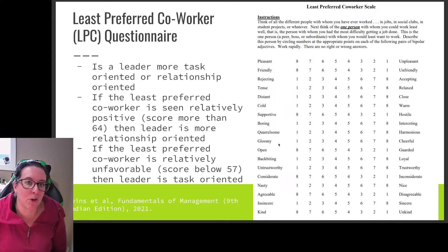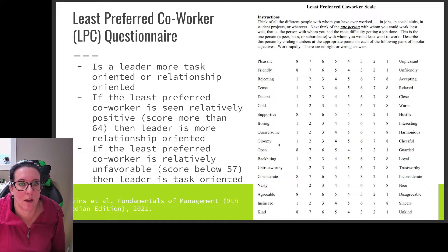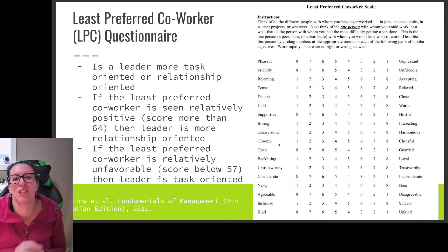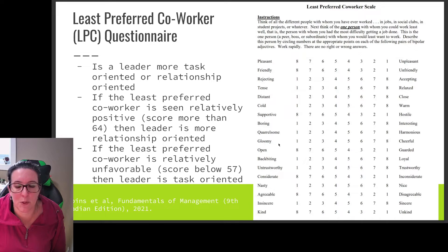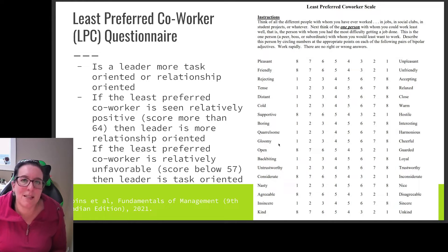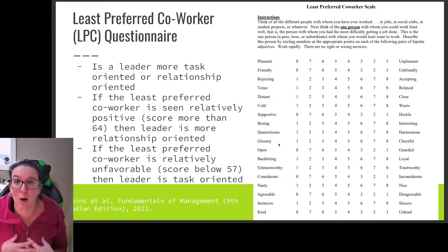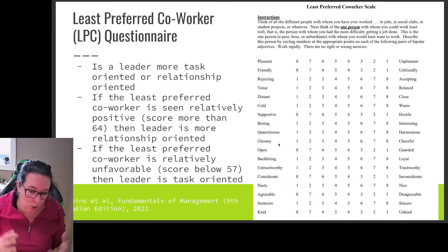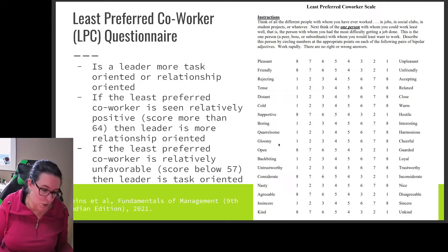How do we determine that with the least preferred co-worker scale? You think about the worst person you've ever worked with — someone you've been in a project with, a peer, a boss, a subordinate, just a person who was terrible to work with. Then you answer scaled questions about them: were they more pleasant or unpleasant, friendly or unfriendly, rejecting or accepting, tense or relaxed, and so on. The idea is to figure out whether you focus more on that person in terms of their performance, or in terms of their personality and relationship to you.